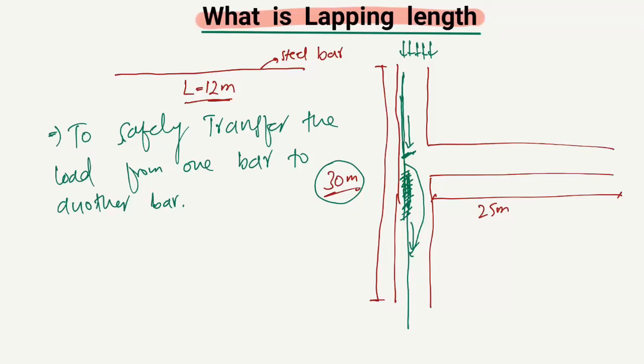Similarly, for a beam of 25 meters length — if one steel bar is 12 meters — we provide another steel bar and connect it with a lapping length to transfer the load from this bar to the next bar. So you understand why we provide lapping length: in order to transfer the load or stresses from one steel bar to another, to maintain continuity in our structural members.